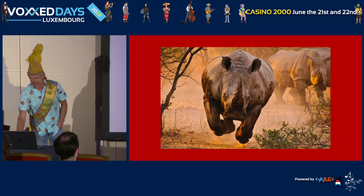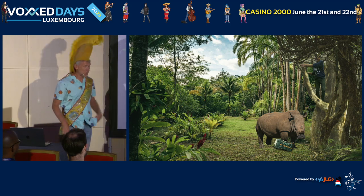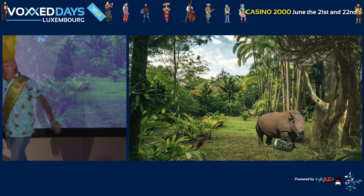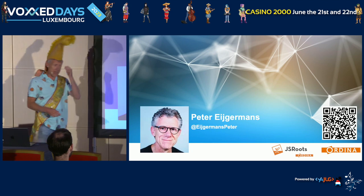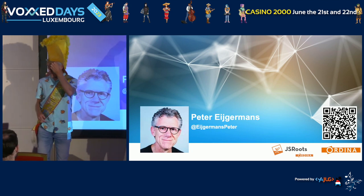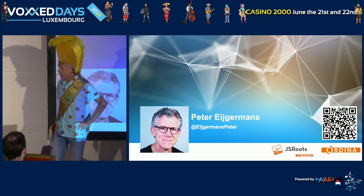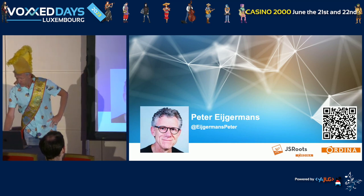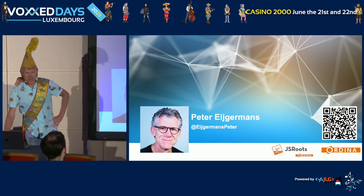I was shivering on the branch, of course. Here I'm standing on the tree — it was not as cute as it looks; it was a very dangerous situation. I'm Peter Eigenmount from Holland, and I work for Ordina, which is specialized in front-end and back-end. I work for JS Roots, the department of Ordina which is 100% specialized in front-end. I'm also an international speaker and front-end programmer.